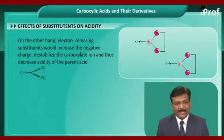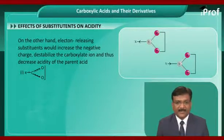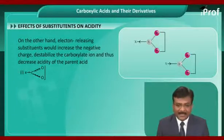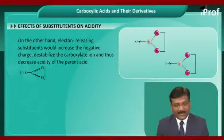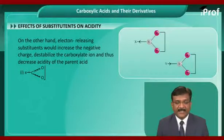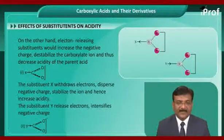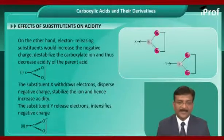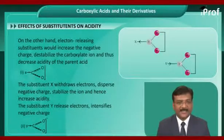On the other hand, electron-releasing substituents would increase the negative charge, destabilize the carboxylate ion, and thus decrease the acidity of the parent acid. In summary: substituent X withdraws electrons, disperses negative charge, stabilizes the ion, and hence increases acidity.